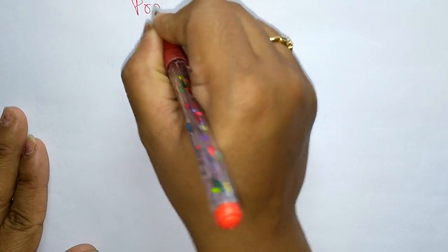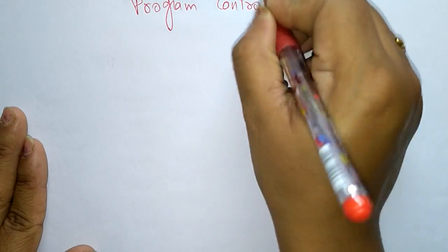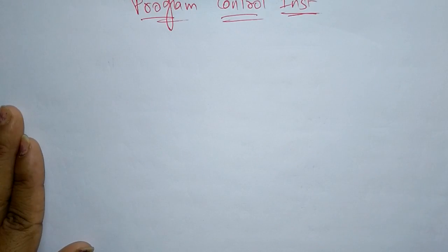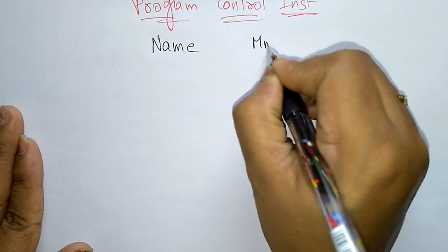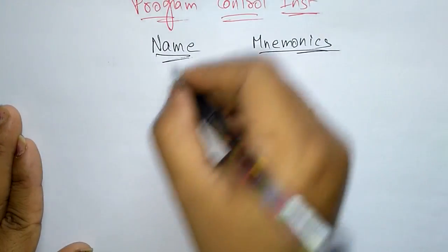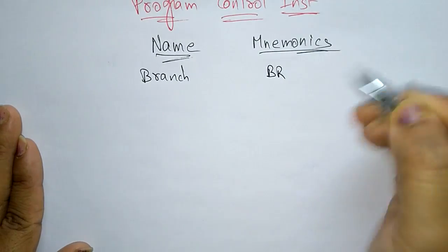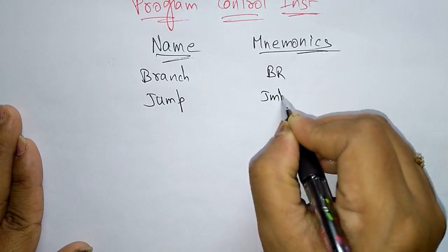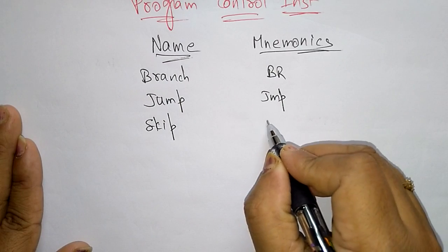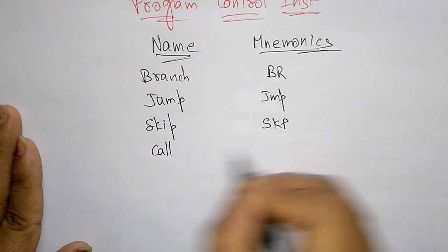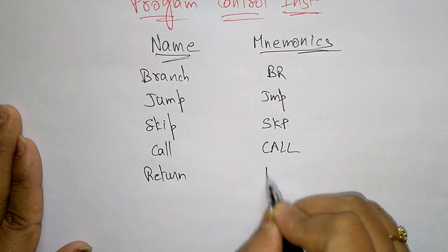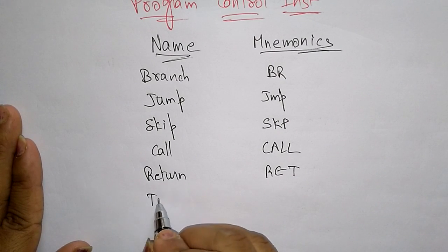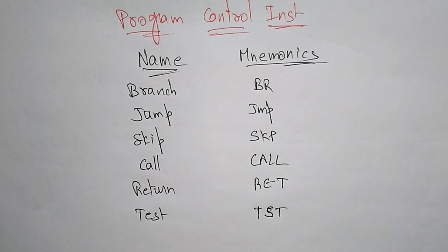The third type is program control instructions, which control the program. These include: Branch — jumping from one location to another (conditional or unconditional), Jump, Skip (SKP), Call (CALL), Return (RET), and Test (TST). This concludes the three types of instructions: data transfer, data manipulation, and program control.